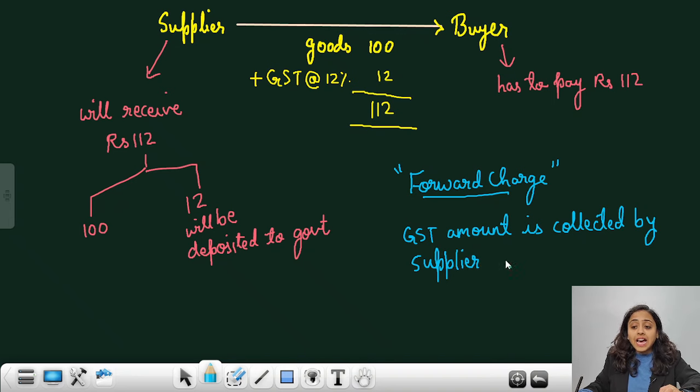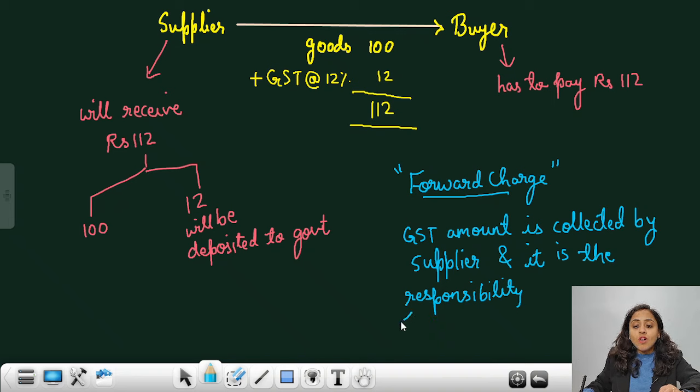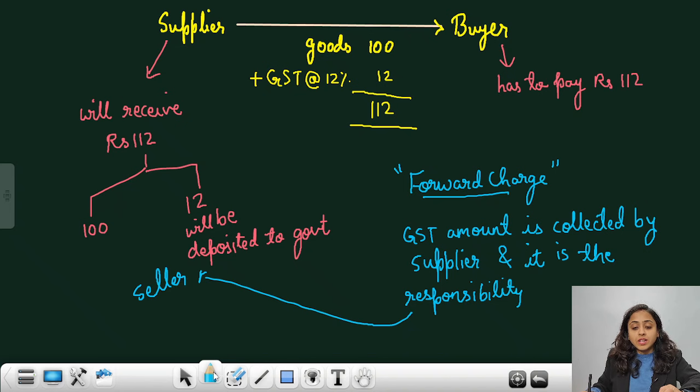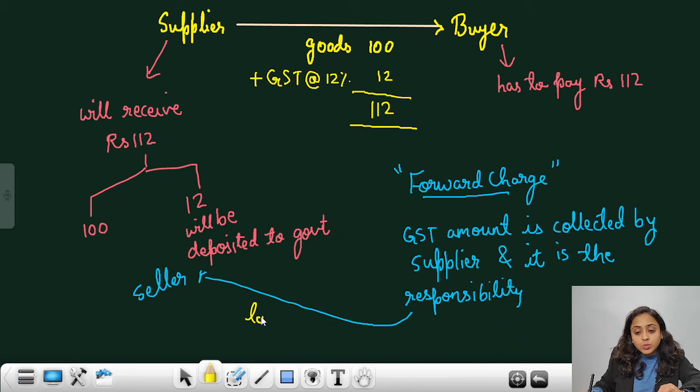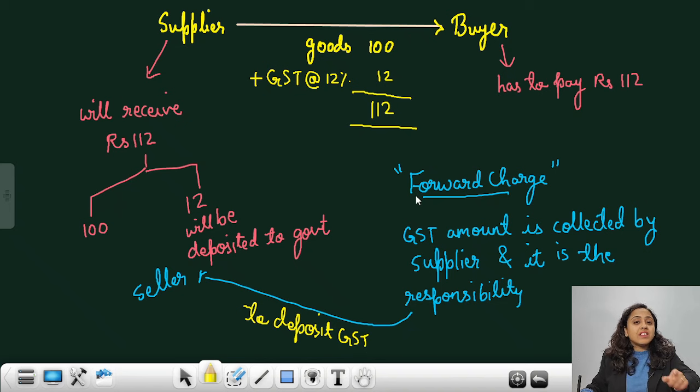And it is the responsibility, it is the responsibility of seller to deposit GST amount. Got it? Seller is the one who is collecting the taxes, indirect taxes, and seller is the one who has liability, who has responsibility to deposit the GST amount. The entire outflow is from the buyer's pocket.